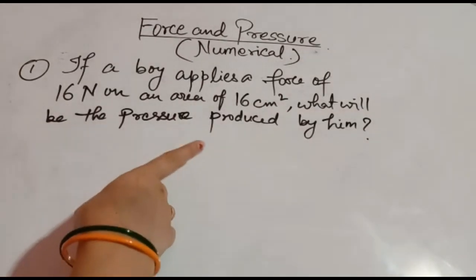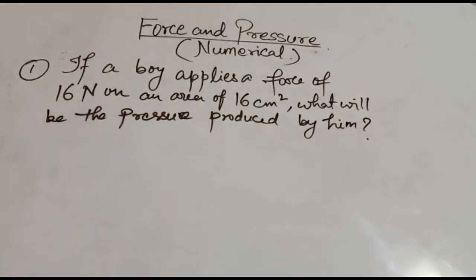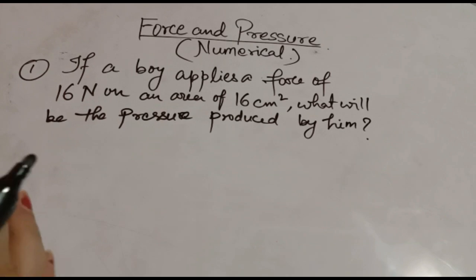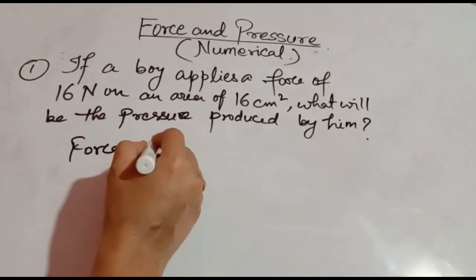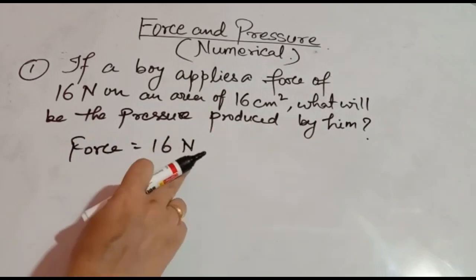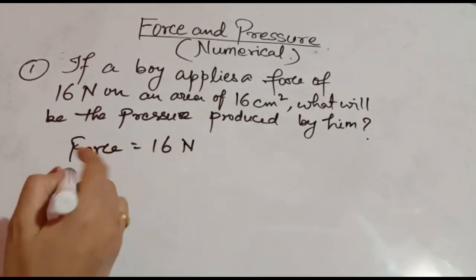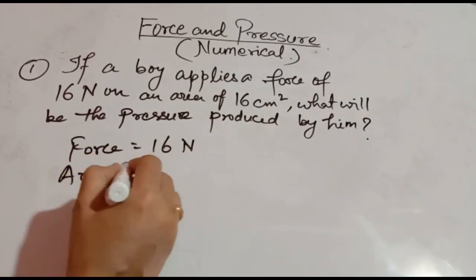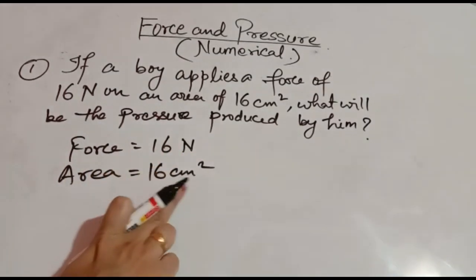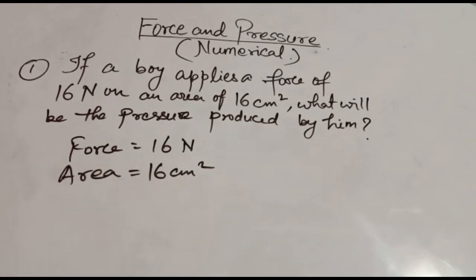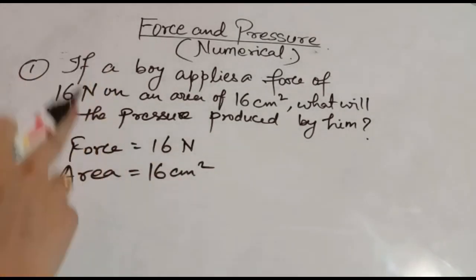If a boy applies a force of 16 Newton on an area of 16 centimeter square, what will be the pressure produced by him? In this question, first see what is given. Force is 16 Newton — the unit is correct, it is given in Newton. Area is equal to 16 centimeter square. Here you have to see that the area is given in centimeter square, which you have to change to meter square. Only then we find the pressure.